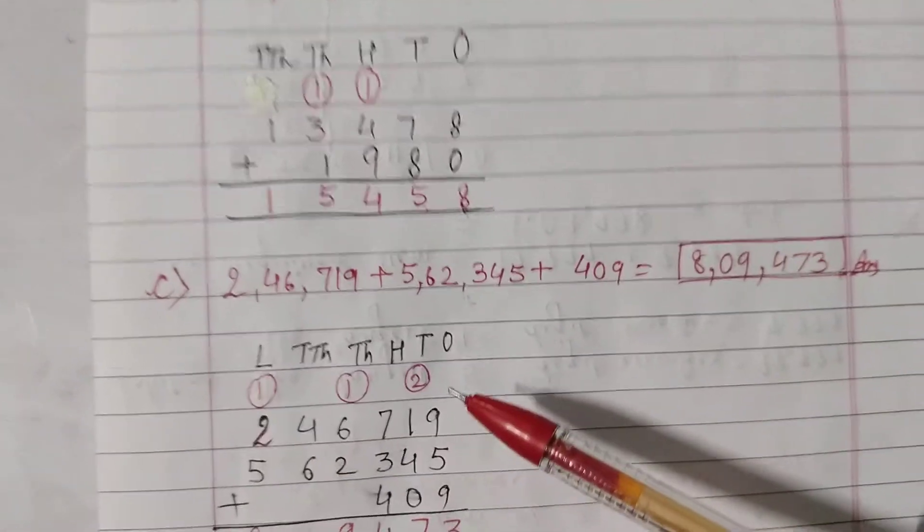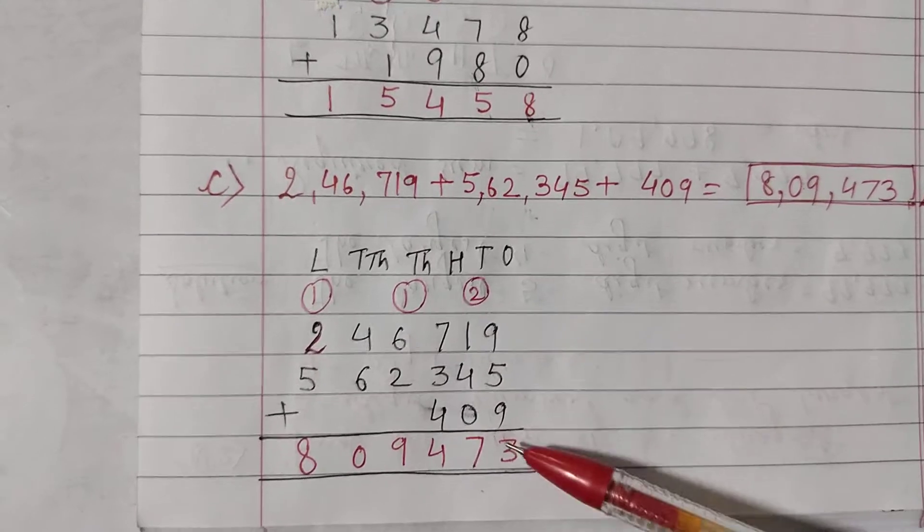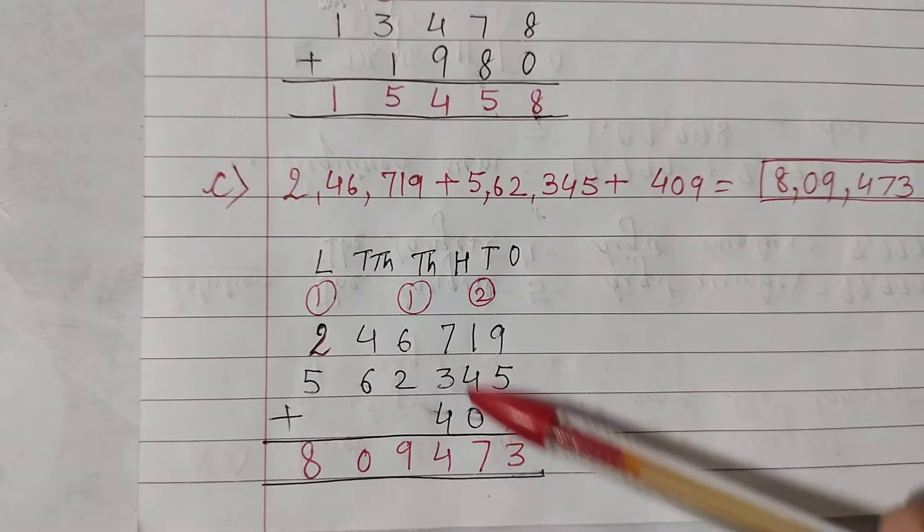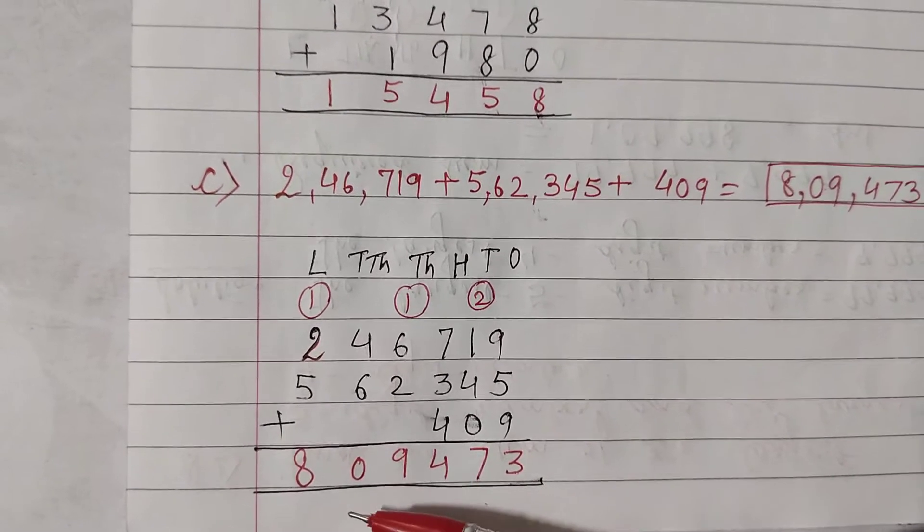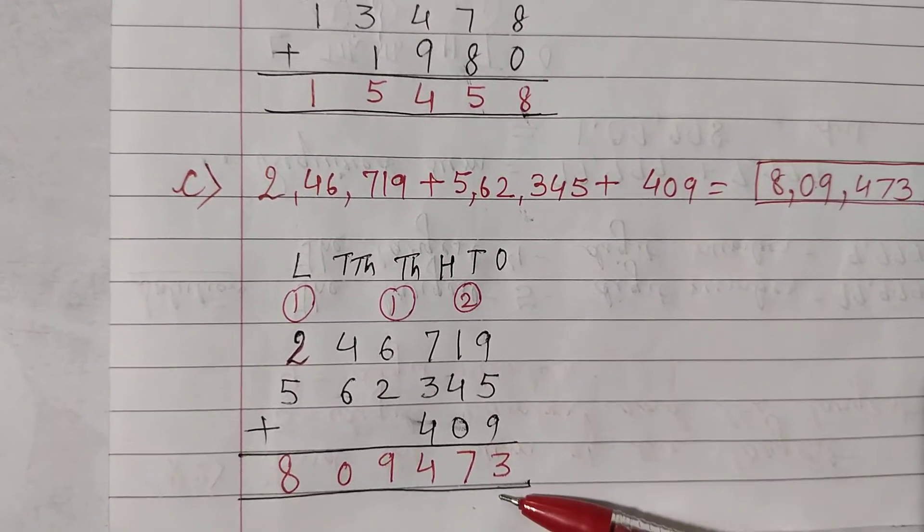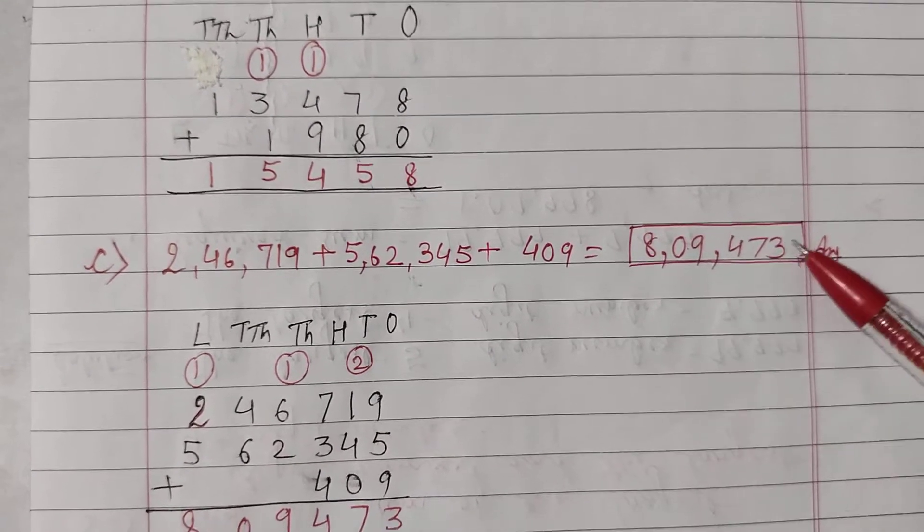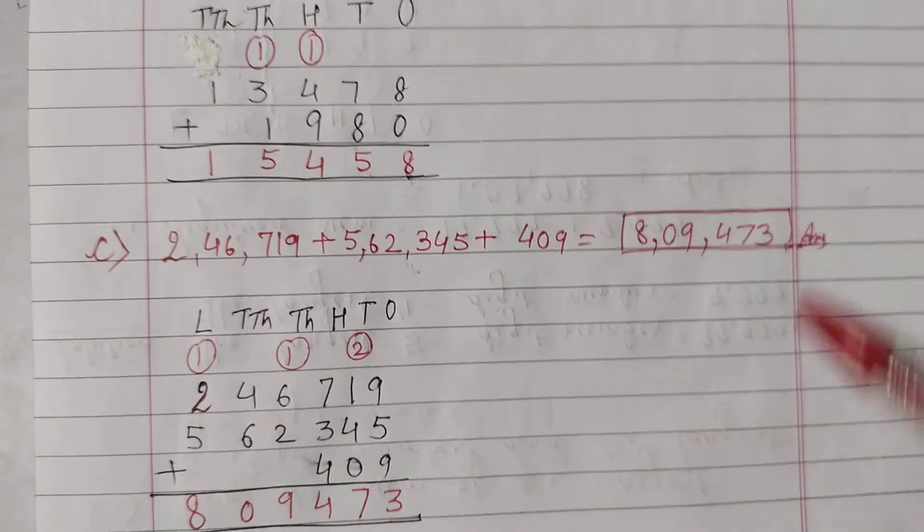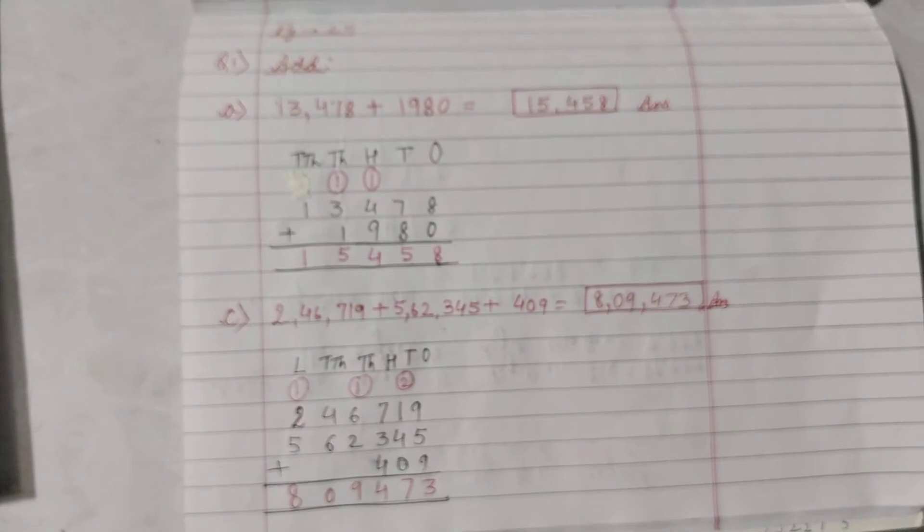Similarly, children, in question number C, you have to add 3 numbers. Again, we arrange all these 3 numbers according to Indian place value chart. You can see. On addition, we are getting 89,473. Write here the answer and place the commas accordingly. I hope you are getting. In the same way, you have to solve in your copy.